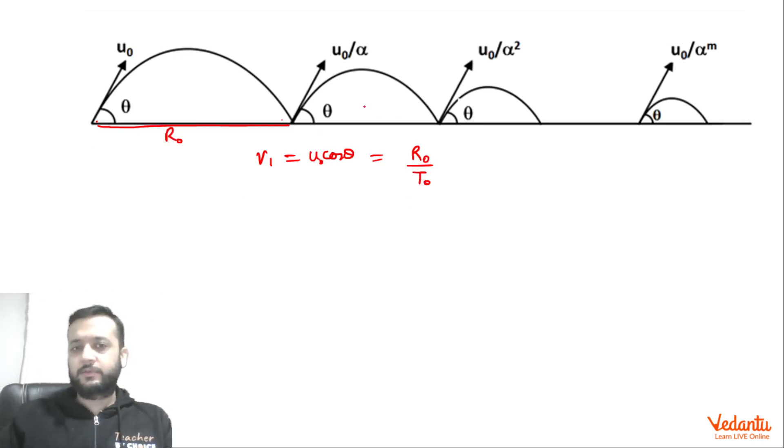Now it is easy to see what is range. Range is u² sin2θ/g. Now θ is not changing, g is not changing, u has become 1/α times. So can we say that here range will become, range is proportional to u², so range will become R₀/α². Similarly here it will be R₀/α⁴ and so on and so forth.